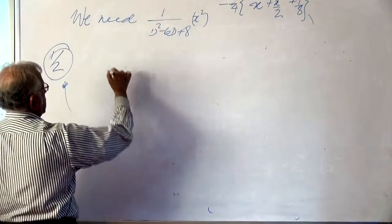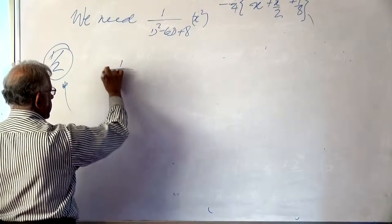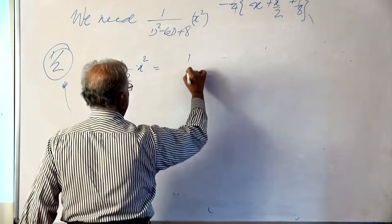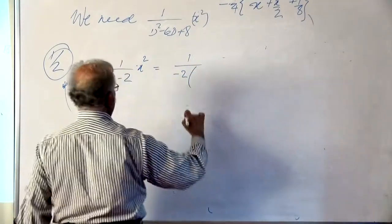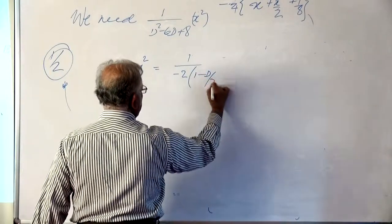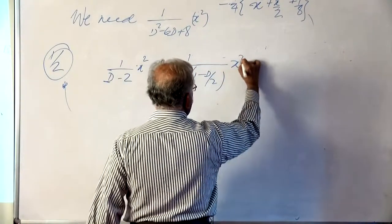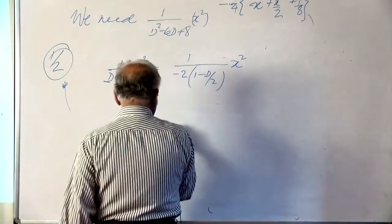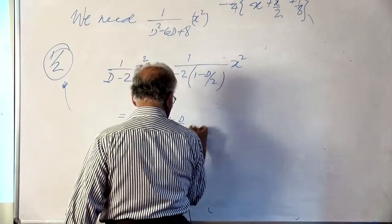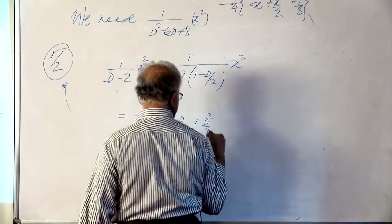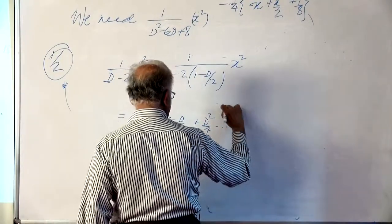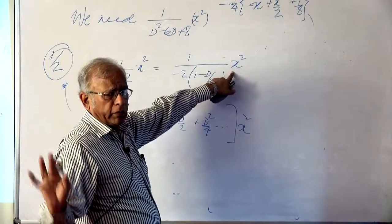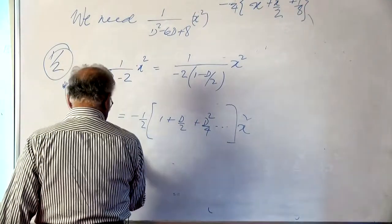Our task is now 1/(d-2) operating on x². This is nothing but 1/(-2) times [1 - d/2] operating on x². This is -1/2. Expanding we get [1 + d/2 + d²/4] applied on x². No further term is necessary; the next term would be d³ but d³ on x² will be 0.